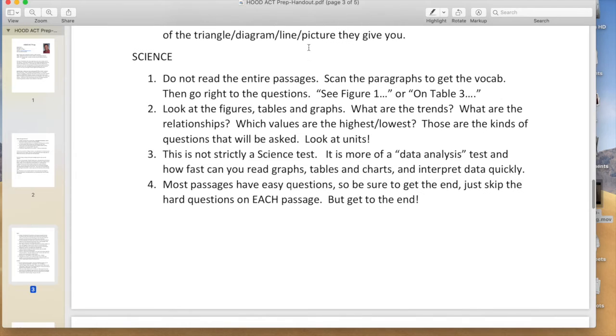The science is not strictly a science test - it's how fast you can read and interpret data. Just like the reading section of the ACT, it's a good tip for most people: do not read the entire passages. Scan the paragraphs to get the vocabulary, then go right to the questions. I've noticed a trend in the last couple of years - they have varying viewpoints like scientist one, scientist two, or student one, student two, student three. But a lot of the questions are still read the figures, especially question one.